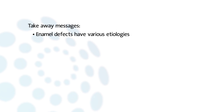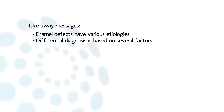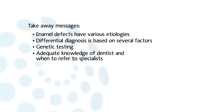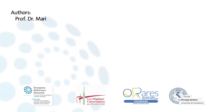Enamel defects have various etiologies, which may be local, environmental, or genetic. Whatever the form, the alteration of enamel is irreversible. The differential diagnosis of AI is based on the family history, pedigree plotting, and meticulous clinical observation as well as radiographic examination. A molecular etiology could be established by laboratory-based genetic testing. The dentist should know when to refer the patient adequately to a specialist or a geneticist, particularly if a syndromic form is suspected.